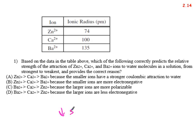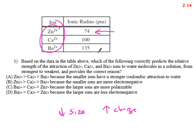For ion-dipole attraction strength, we want the smaller size and the greatest charge. Since all the ions have the same charge, we want the smallest size—zinc has the strongest attraction, then calcium, then barium. Smaller ions have greater attractions.